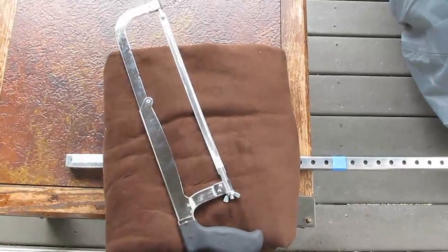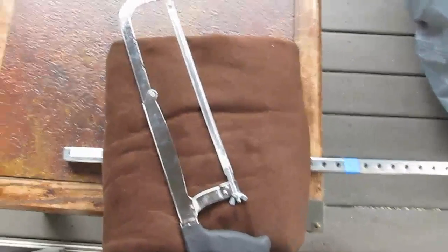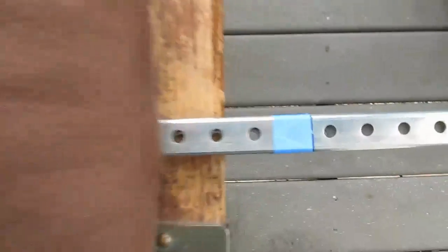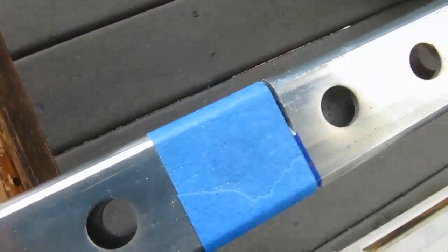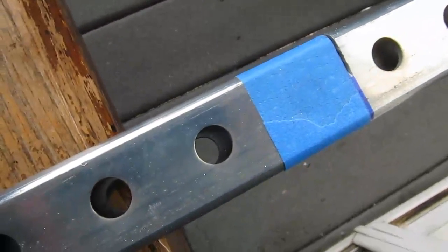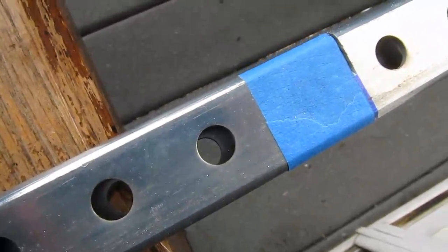I'm using a hacksaw to cut through the steel tubing. It's a bit slow going, but it works. As you can see right there, this is my 15 inch long piece that I'm cutting right now.